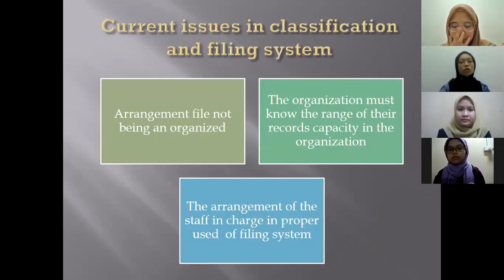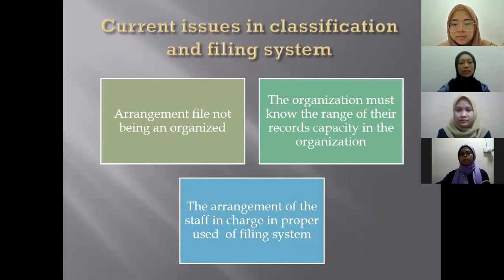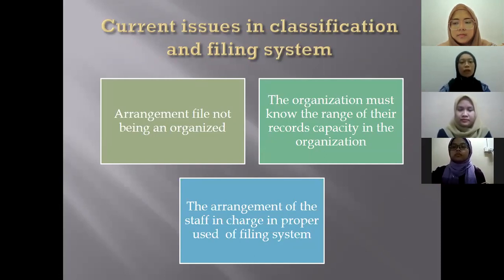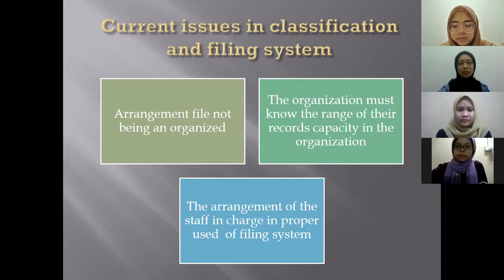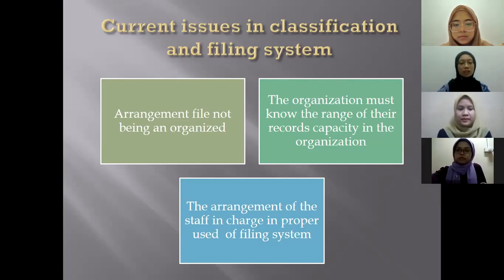Next is the current issue in classification and filing system. First is files not being organized, due to irresponsible staff handling records during retrieval. The organization must know the range of their records capacity to avoid duplication and confusion. The last issue is the proper arrangement of staff in charge of the filing system.